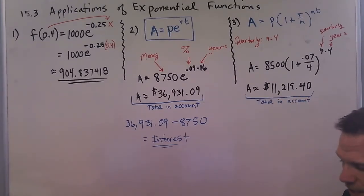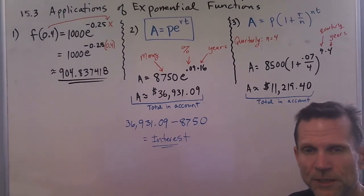Once we plug the values in, we work with our calculator and come up with $11,219. Again, this is the total in the account. If you need to find the interest, you would take this $11,000 minus the $8,500. But this problem asks for the total amount in the account, so we're done. Be careful with your substitution, round things properly, and use your calculator correctly.